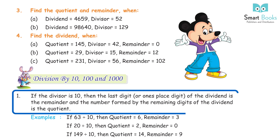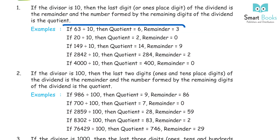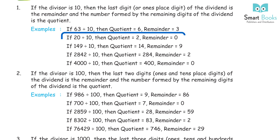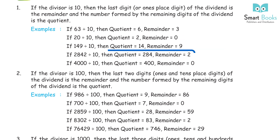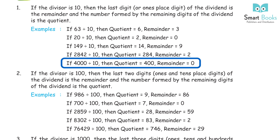Division by 10, 100, and 1000. Rule 1: if the divisor is 10, the last digit (ones place) of the dividend is the remainder, and the remaining digits form the quotient. Examples: 63÷10 → quotient 6, remainder 3; 149÷10 → quotient 14, remainder 9; 2842÷10 → quotient 284, remainder 2; 4000÷10 → quotient 400, remainder 0.